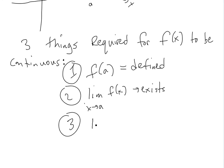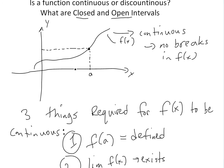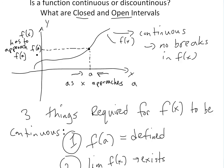The third requirement is that the limit as x approaches A of f(x) equals f(A). So if it's defined, the limit has to equal f(A). What this means is that if you move x closer and closer to A, f(x) has to approach f(A). As it gets closer and closer, you get a limit that equals the function value, and it's all defined.